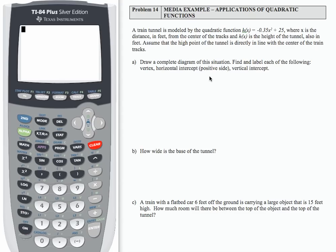It says, draw a complete diagram of the situation. So I'm going to start by drawing an axis, vertical and horizontal, and then I'm going to draw the shape of a tunnel. And then this is going to be my H of X. That's my height. And this is going to be my X.